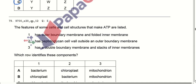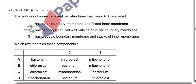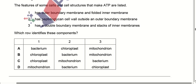The features of some cells and structures that make ATP: one has an outer boundary membrane and folded inner membranes — this is mitochondria. One has a peptidoglycan cell wall outside an outer boundary membrane — this is bacteria. One has a double boundary membrane and stacks of inner membranes — this is chloroplasts, where the stacks are the grana. Option D is correct.